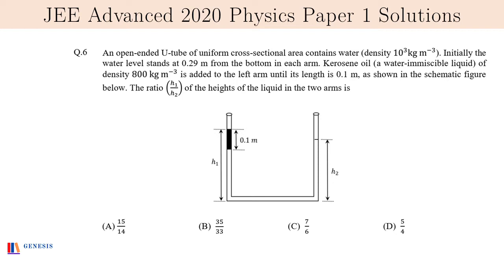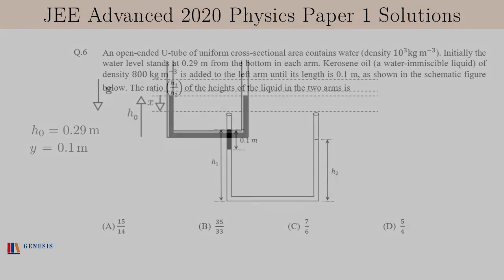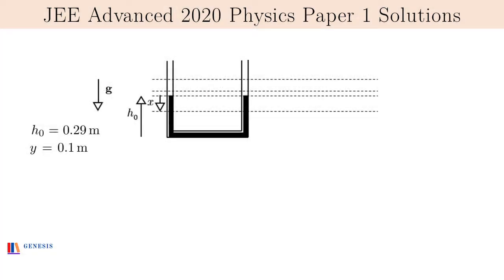This is quite an easy question from fluid mechanics. It's a very standard question. To solve this, let us denote the length of water column in each arm initially as h0, which is 0.29 meters.